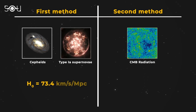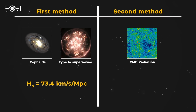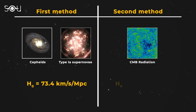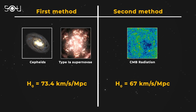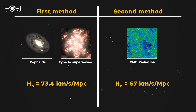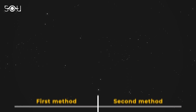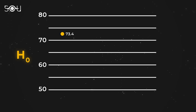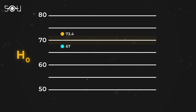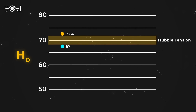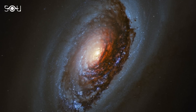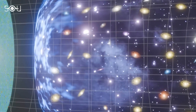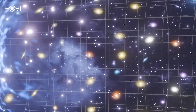However, they encountered a surprising twist. The value of the Hubble constant from the CMB method turned out to be around 67 km per second per megaparsec, less than what was determined by using Cepheid and supernovae. The discrepancy between these two values may seem small, but it is statistically significant and beyond the expected margins of error. This discrepancy is what's referred to as the Hubble tension — the biggest crisis in cosmology. Essentially, it's a conflict between the universe's expansion rate as observed directly in our local neighborhood versus the expansion rate inferred from the conditions of the early universe.